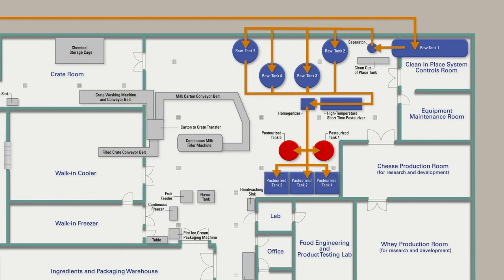Pasteurized Tanks 1 through 3 are used to hold pasteurized milk, while Pasteurized Tanks 4 and 5 are used for ice cream production.